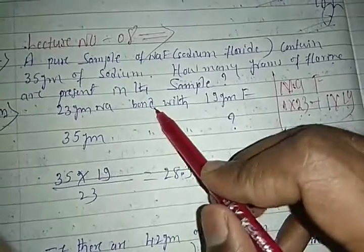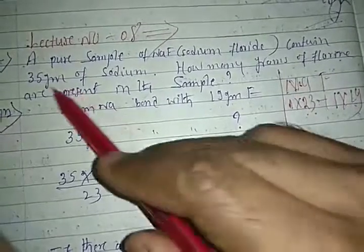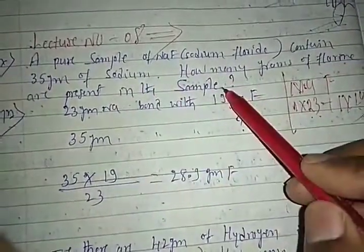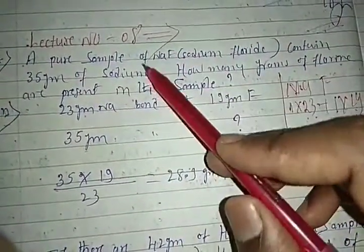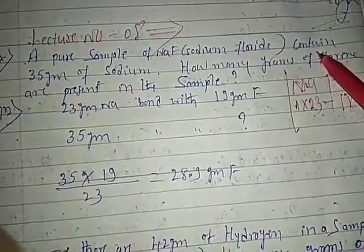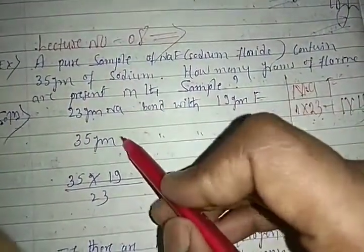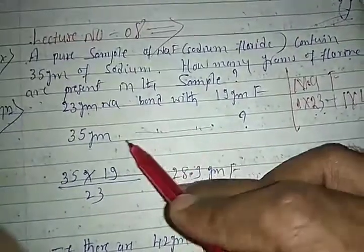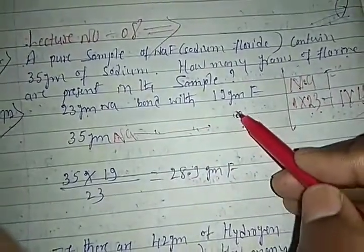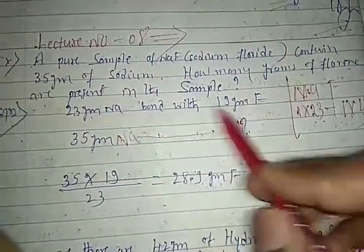Now, if 35 grams of sodium is present in the compound, how many grams of fluorine must be present? We know 23 grams of sodium bonds with 19 grams of fluorine. So for 35 grams of sodium: 35 × 19, cross-multiplied and divided by 23.